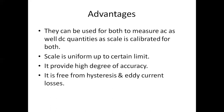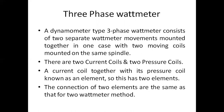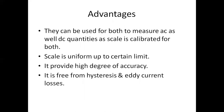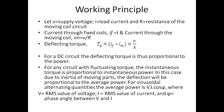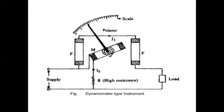To recap the single phase watt meter: the fixed coil helps to measure the load current, and the moving coil placed between the fixed coils helps to measure the voltage. This allows us to measure the instantaneous power P equal to VI, or for AC, P equal to VI cos phi.